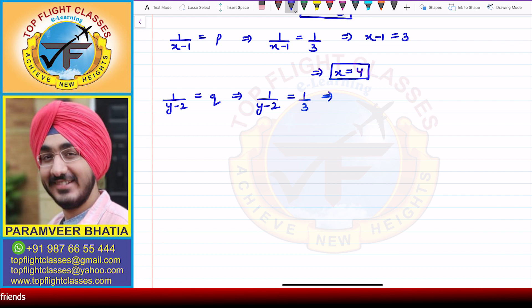So 1/(y-2) = 1/3. This implies that y - 2 = 3, so from here I get that y = 5, and that is what is required in this question.